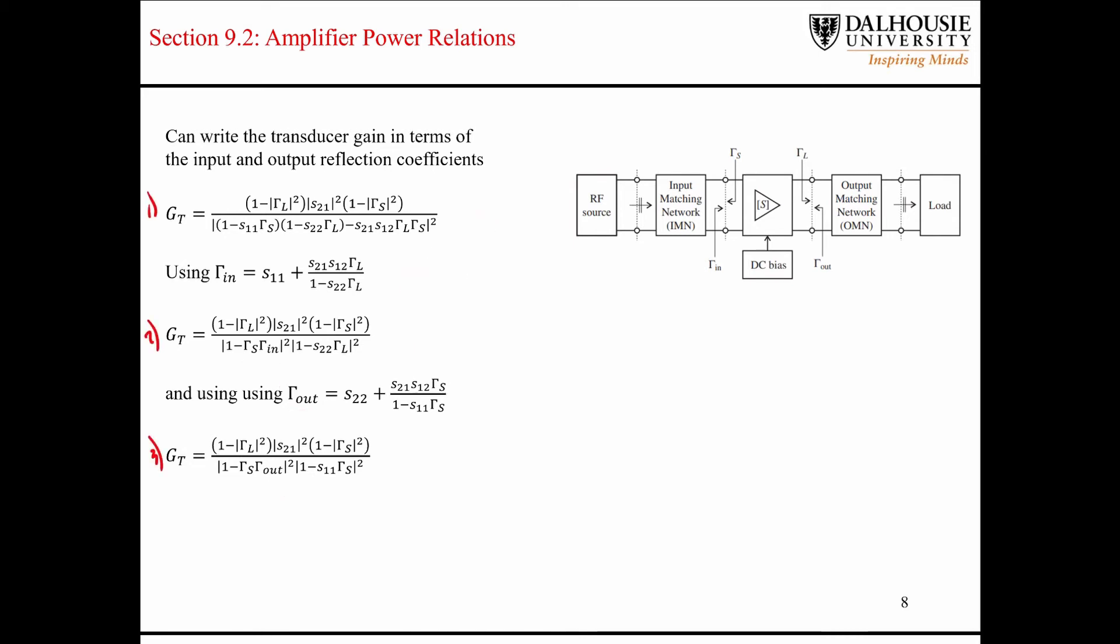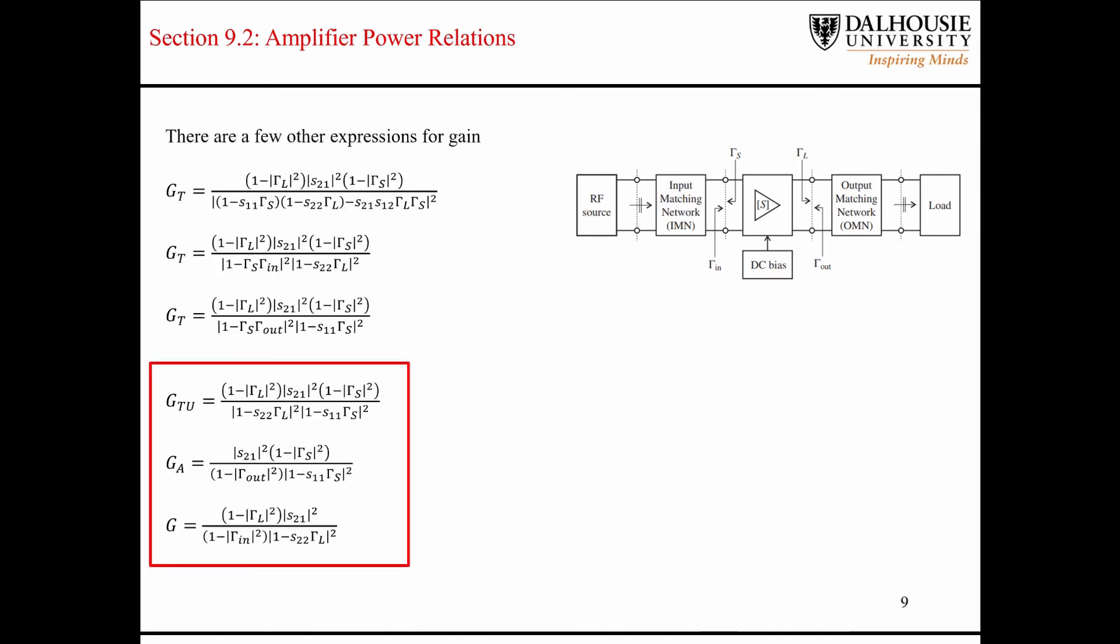These three equations here are used to derive other constant gain expressions. The other three expressions are shown down here in the red box. Between this class and the next class, these are the three equations that we're going to be dealing with primarily. Today we're going to be looking at just the operating gain and the unilateral gain expressions. We'll get into the other one here, which is the available power gain next class. Basically, the equations for the transducer gains are used to derive these other three equations.